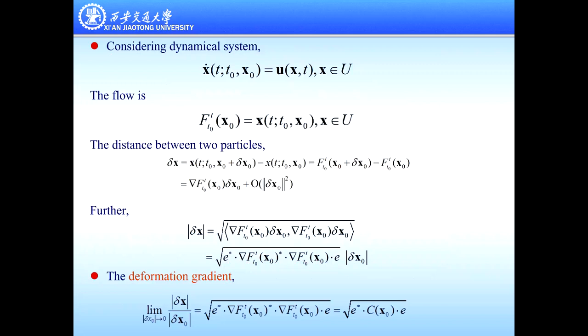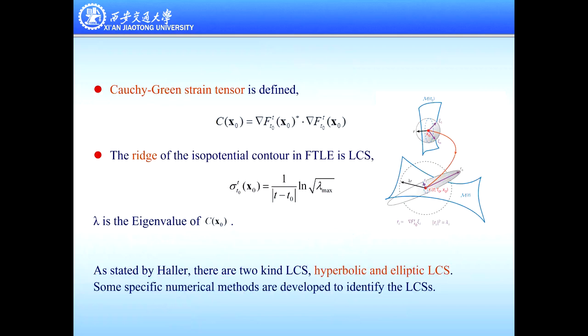Here we give the formulas for calculating the Finite Time Lyapunov Exponent. The first step is to obtain the deformation gradient tensor. Then, based on that, we get the Cauchy-Green strain tensor. The ridges of the scalar field of the Finite Time Lyapunov Exponent represent the LCS. If we find the LCS, we find the structures of the fluid field. There are two kinds of LCS: hyperbolic and elliptic LCS. In the following study, we use the elliptic LCS to define and detect vortices.